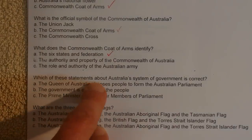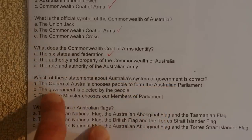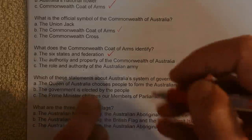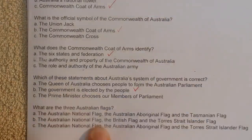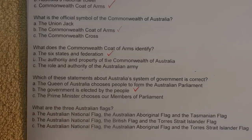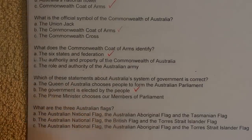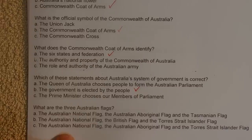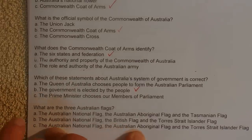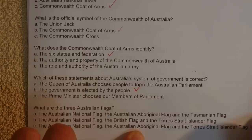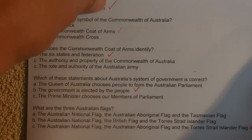Which of the statements about Australia's system of government is correct? Answer B is correct: the government is elected by the people. What are the three Australian flags? We have the Australian national flag, the Aboriginal flag, and the Torres Strait Island flag.